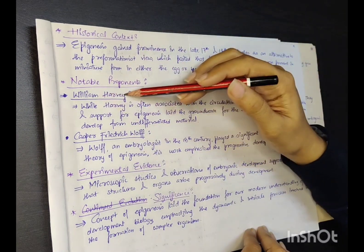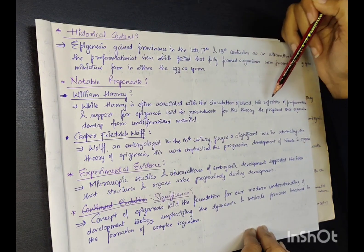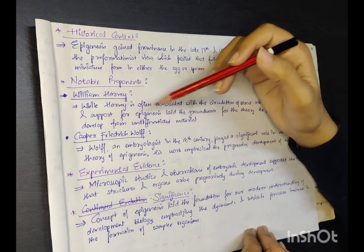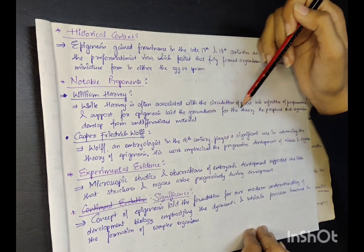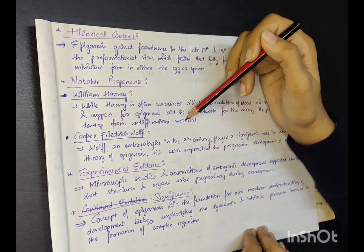Notable proponents include William Harvey. While Harvey is often associated with the circulation of blood, his rejection of preformation and support for epigenesis laid the groundwork for the theory. He proposed that organisms developed from undifferentiated material.